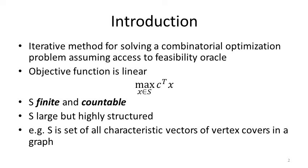The ellipsoid method is an iterative method for solving a combinatorial optimization problem that assumes access to a feasibility oracle — a hypothesized machine that takes a candidate solution as input and checks its feasibility. One requirement is that the objective function has to be linear, for example the dot product of a fixed vector and a vector representing a candidate solution. It can be either a maximization or a minimization problem.